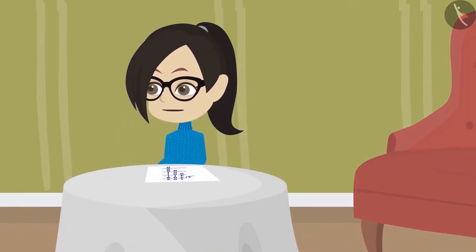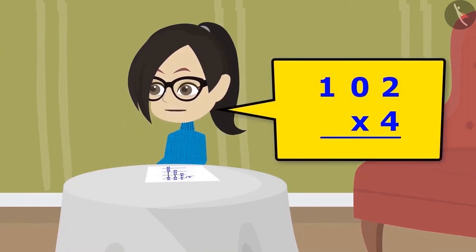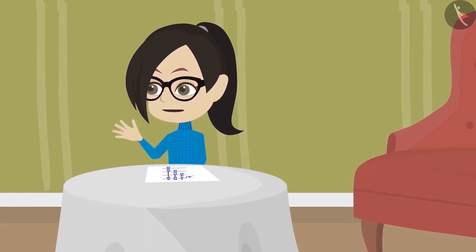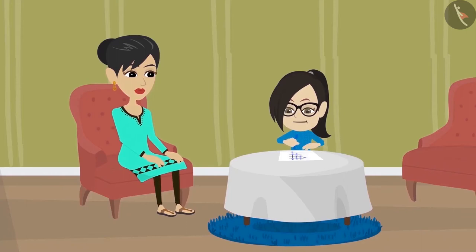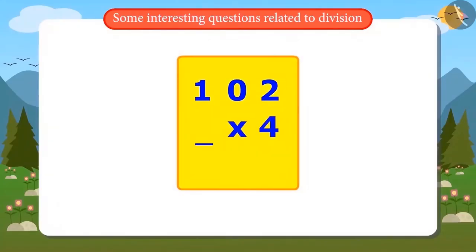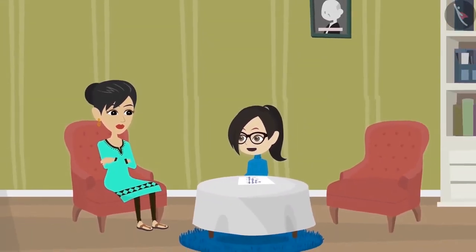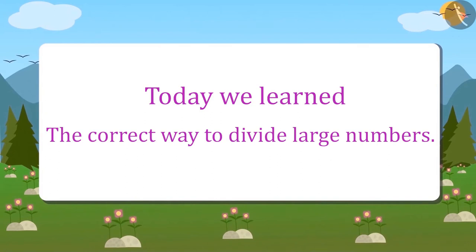Okay mother, I will multiply 102 by 4. If the answer comes to be 408, then the division is correct. Yes, to multiply 102 by 4, I will write it like this. And now I will multiply. The answer came 408. That means I divided it correctly. Today we learned what is the correct way of dividing large numbers.